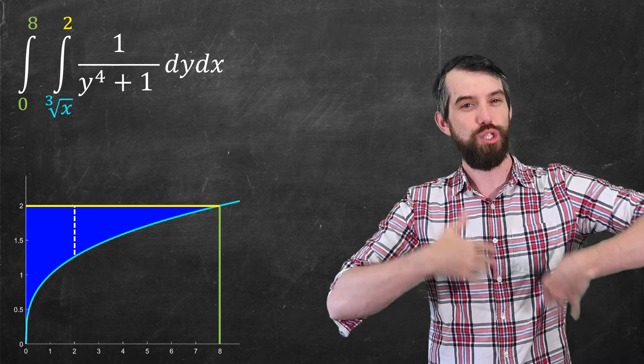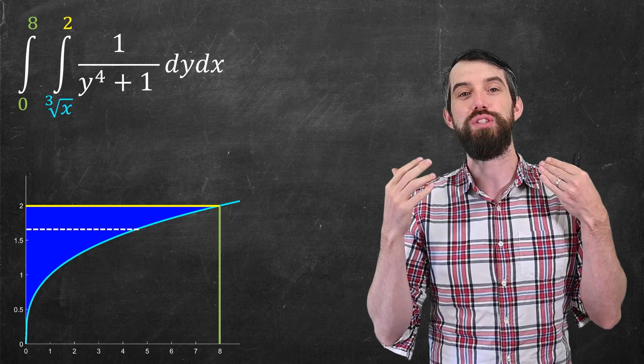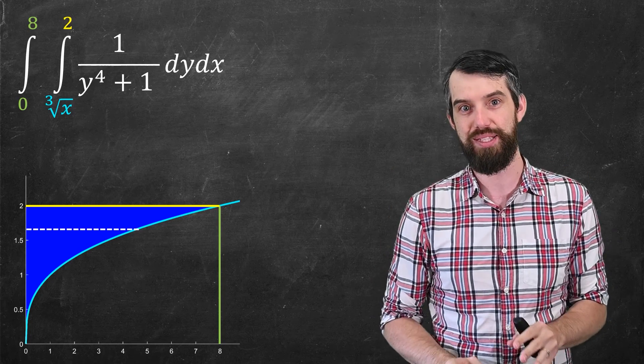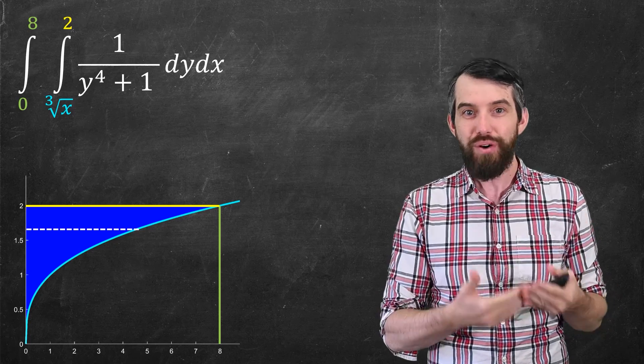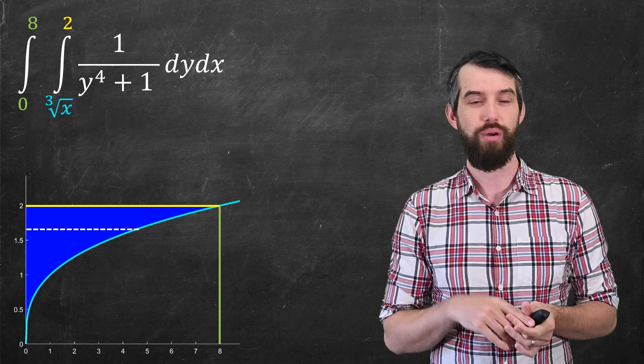So if I want to switch the order of integration, let me instead take a generic horizontal strip. Everything else is exactly the same. It's just now I'm thinking about first integrating with respect to x, and then integrating with respect to y.